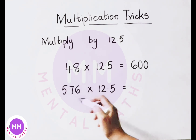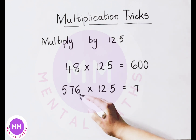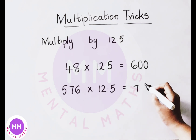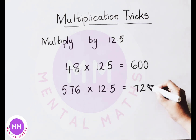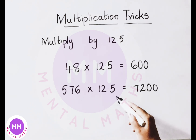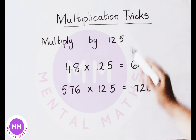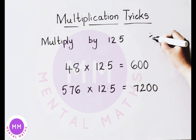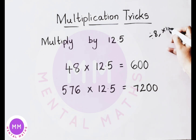See another example: 576 multiplied by 12.5. Divide 576 by 8. 8 into 56 is 7 times, you get a carry of 1, so the number becomes 16. 8 into 16 is 2 times. Now multiply this value by 100 — add two zeros at the end — so 576 multiplied by 12.5 equals 7200. Whenever you multiply any number by 12.5, first divide the number by 8, then multiply that value by 100 to get the result.